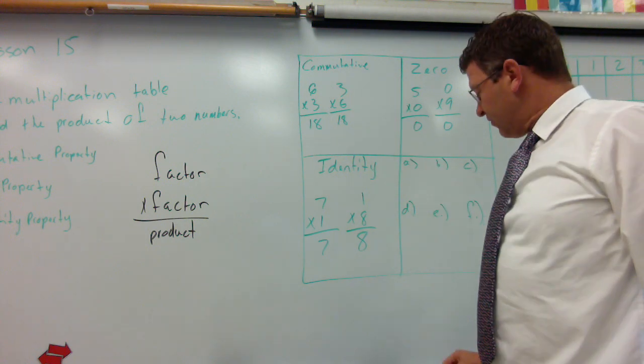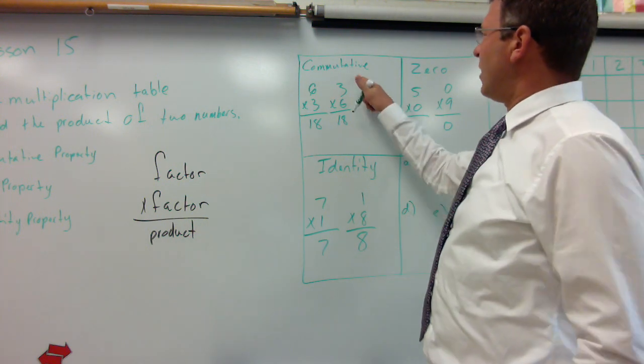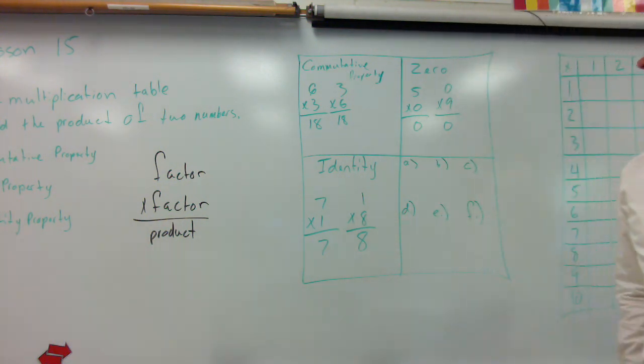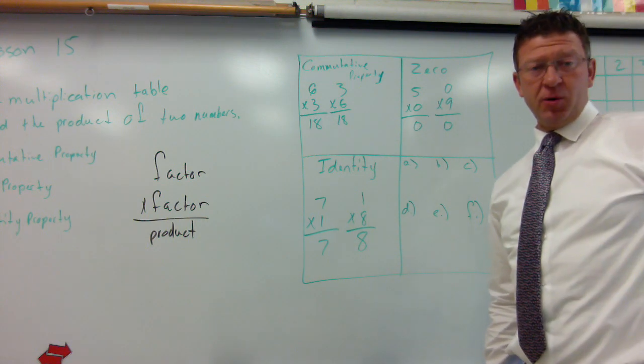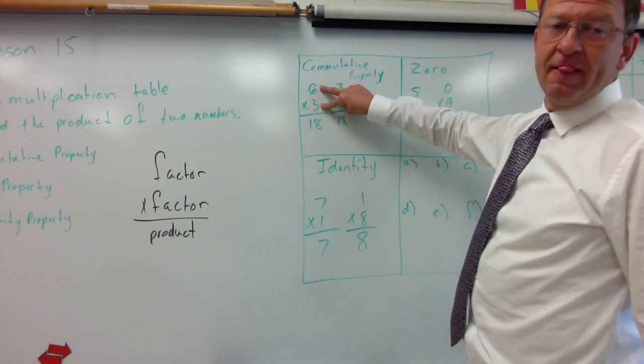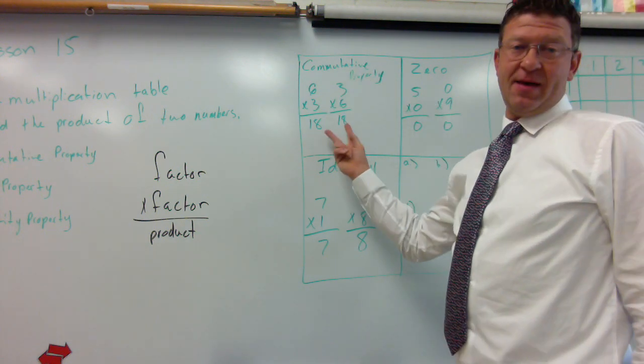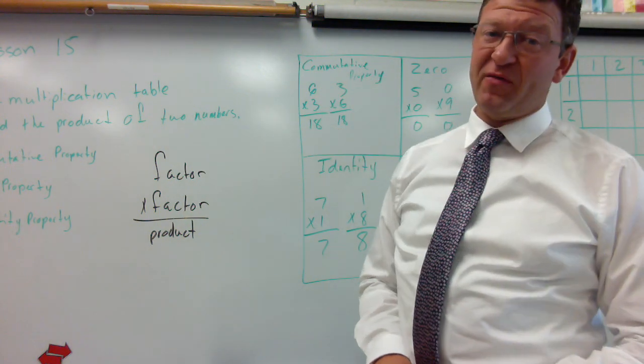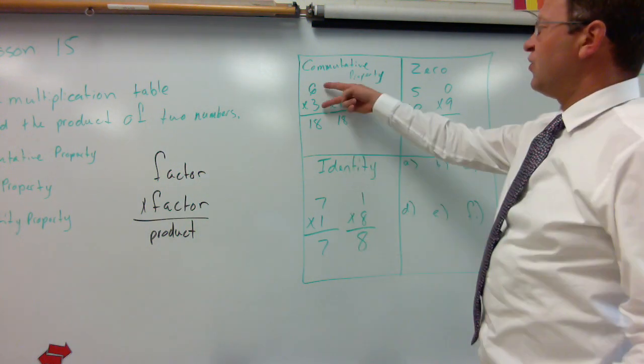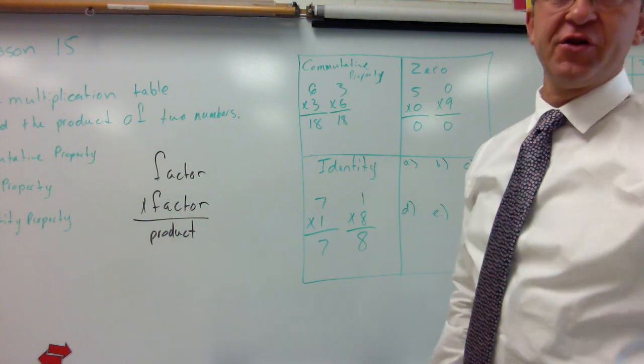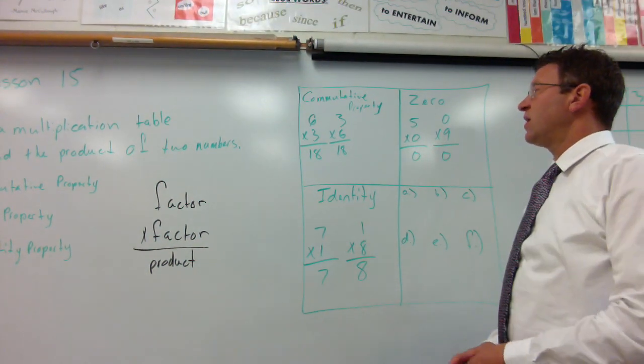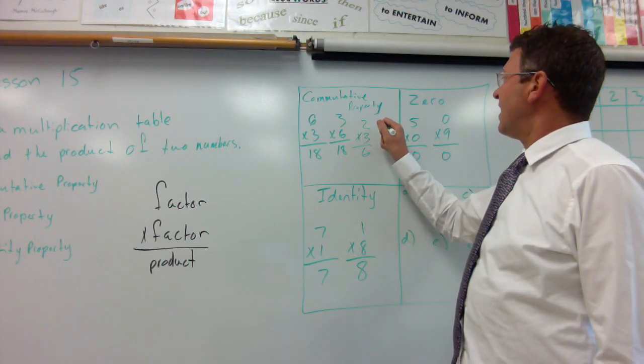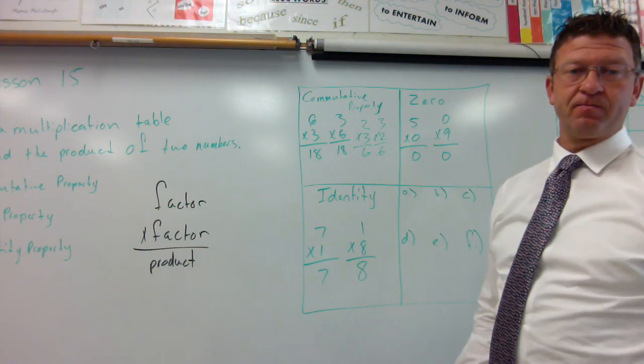In our examples today we are going to put those properties rather than the examples from the book. So flip your power-ups over, divide it into fours. In the first one you can write down commutative property. The commutative property says that you can take six times three and make it three times six and you're still going to get the same answer. You can take two times three and you get six, and three times two and you get six.